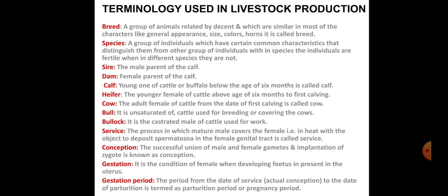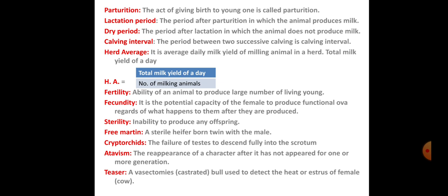The gestation period in humans is about nine months. Similarly in cattle, different gestation periods apply. Parturition is the act of giving birth to the young one — it is called parturition. The lactation period is the period after parturition in which the animal produces milk. The dry period is the period during lactation in which the animal does not produce milk. Calving interval is the period between two successive calvings — it is called the calving interval.